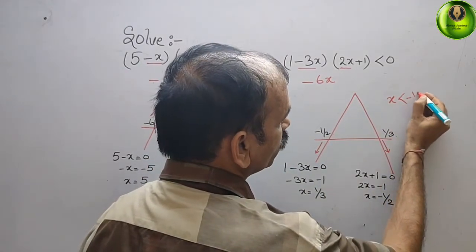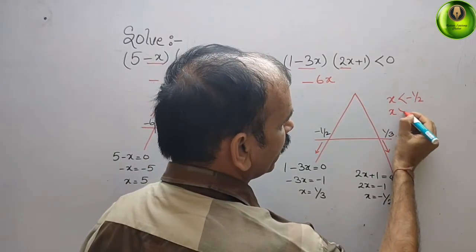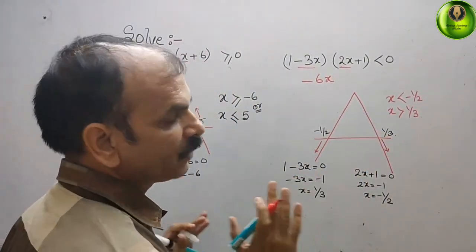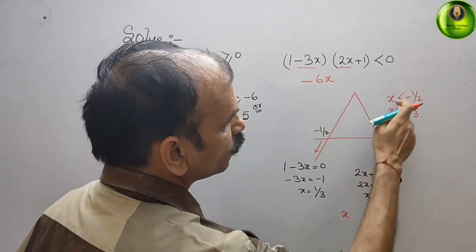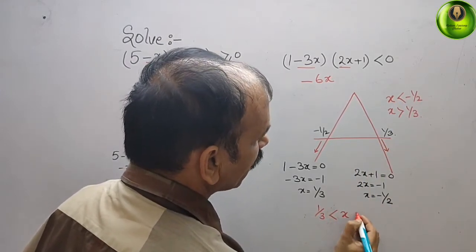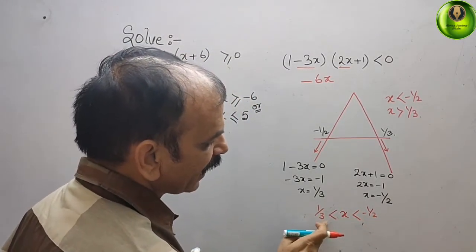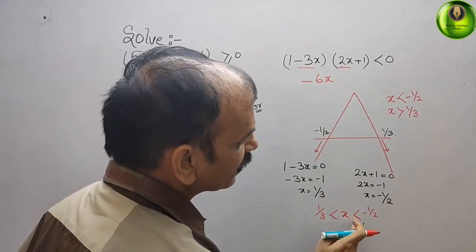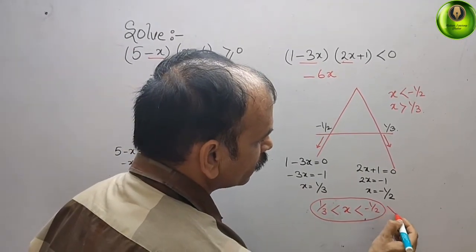From the left region we get x less than minus 1 by 2, and from the right region we get x greater than 1 by 3. Now if we try to form a combined range: x greater than 1 by 3 and x less than minus 1 by 2 — these two conditions cannot overlap. That means there is no valid range; the solution set is empty.